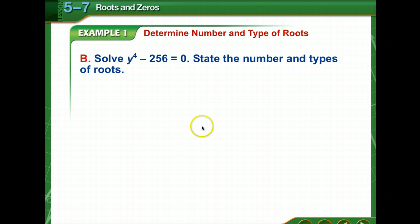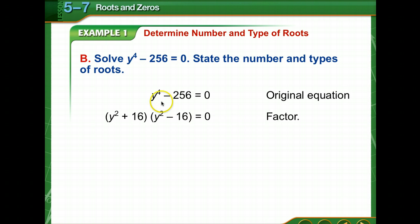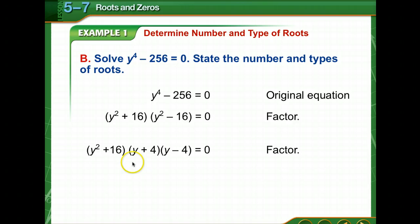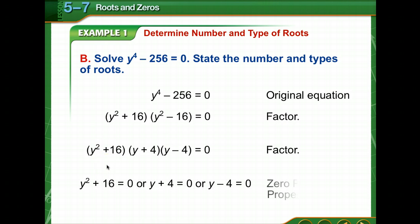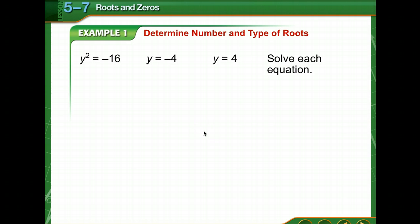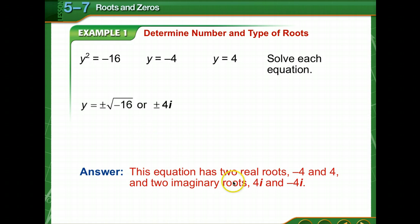This one's different — we've got y to the fourth. We've got a difference of squares here. Notice we can factor the difference of squares, but we cannot factor a sum of squares, because we'll end up with a middle term. We set each factor equal to zero: y squared plus sixteen equals zero, y plus four equals zero, and y minus four equals zero. Taking the square root of both sides, y equals plus or minus 4i. So this equation has two real roots, negative four and positive four, and two imaginary roots, positive 4i and negative 4i.